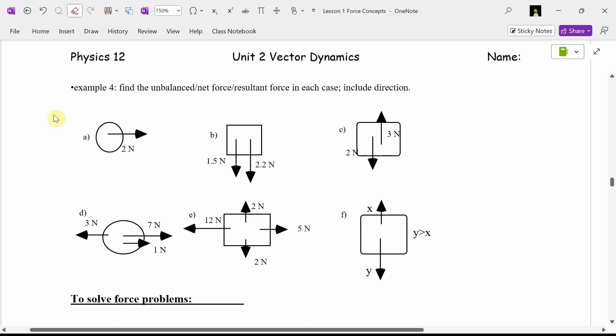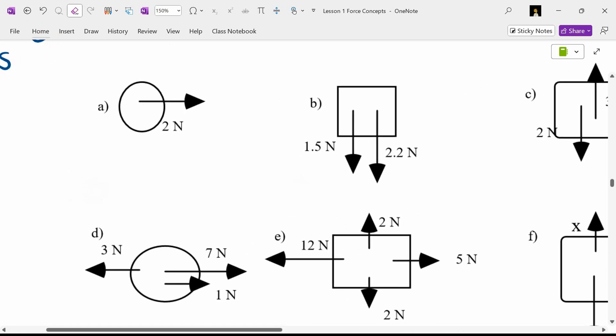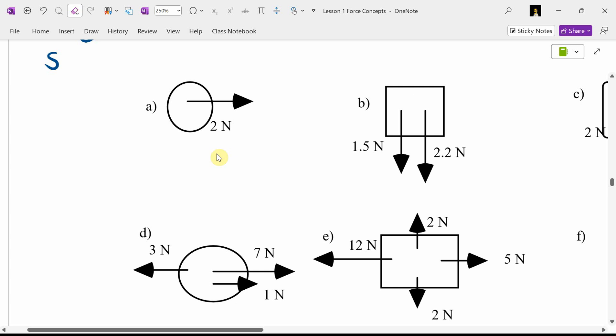One of the things we talked an awful lot about last year was finding the unbalanced or the net force, magnitude, and direction. It says, find the unbalanced or net force in each case. Let's make this a, let's put a compass rose here. Let's say we're looking down. Number one, Braden will start out simple. What is the net force, magnitude, and direction for part A? F net equals 2 newtons at east.